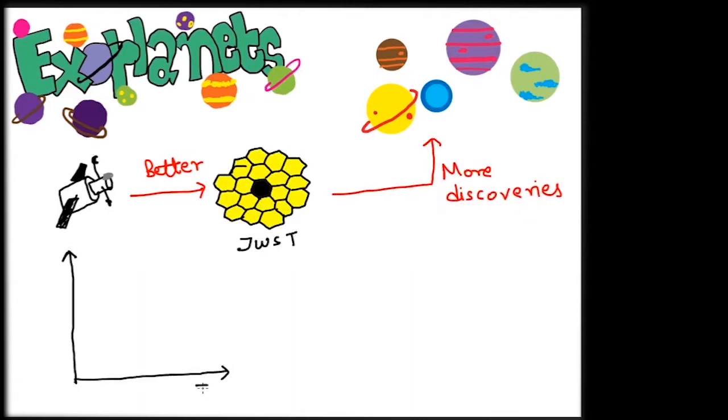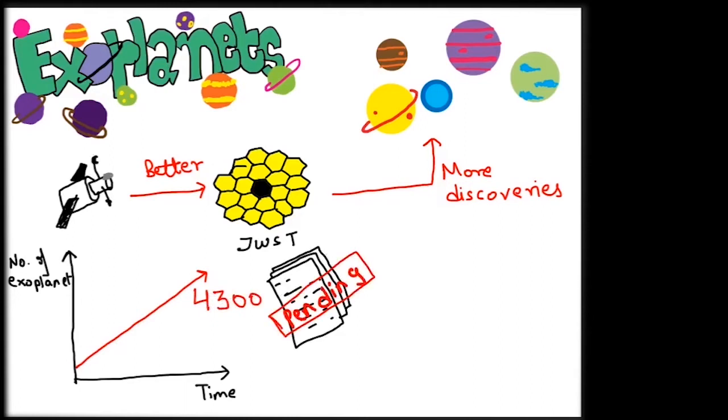It now seems that our planetary system is not so unique. The number of worlds we have discovered crosses the 4300 mark and there are many thousands still waiting to be confirmed.